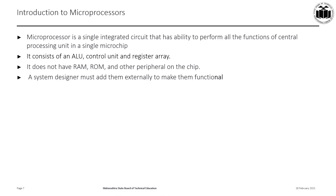A microprocessor is a single integrated circuit that has the ability to perform all the functions of a central processing unit in a single microchip. The functional units of a microprocessor are the Arithmetic Logic Unit (ALU), the Control Unit, and the Register Array. The ALU performs all arithmetic and logical operations. The Control Unit provides control signals such as read, write, data enable, and memory control. The Register Array is a set of registers that store data and results after computation.